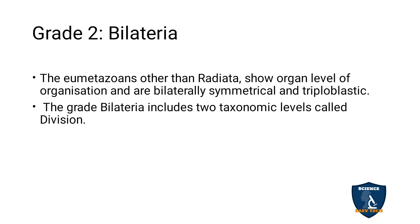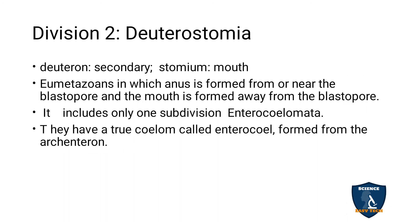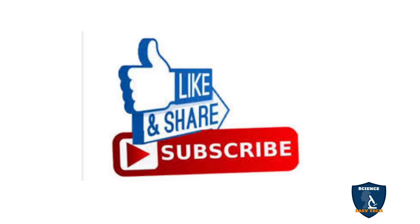So from Grade 2 Bilateria, you have two divisions: Protostomia and Deuterostomia. These are the divisions found in Eumetazoa. Thank you for watching the video. If you like it, give a thumbs up, share, and subscribe to the Science Easy Tech channel.